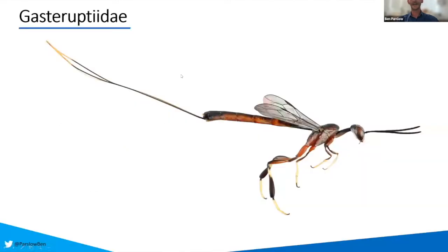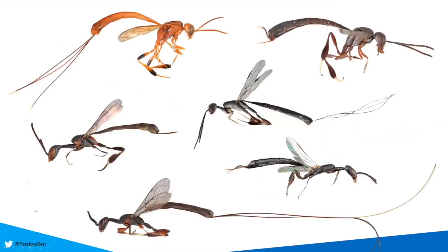For those playing along at home, I work on this really funky, strange-looking group of parasitoid wasps. This is a family called Gasteruptiidae. There's about 514 described species and there's probably a whole lot more unknown diversity. There are about six genera, found all across the world, and they come in lots of fantastic different shapes and sizes, with lots of morphological variation in body shape and ovipositor lengths.